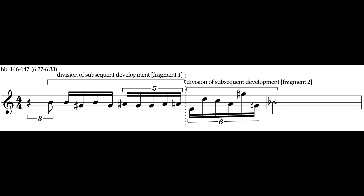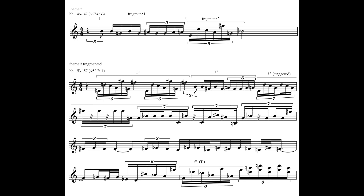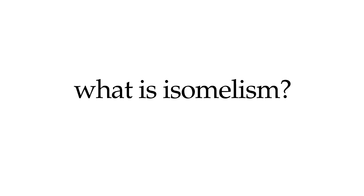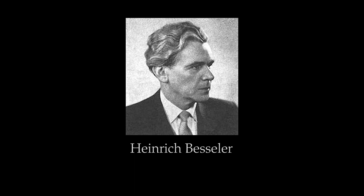A new theme is introduced at bars 146 to 147, and as before is divided into two thematic fragments, which from bars 153 to 157 are subject to separate developmental procedures. The theme is almost replicated in its entirety in bar 154, followed by a staggered second fragment prolonged by note reiteration of the G-sharp and B-flat. The second fragment re-emerges at bar 157 at T1. T1 isomalism is a term coined by German musicologist Heinrich Bessler. It has been adapted to refer to a technique that Zappa uses a lot, which is the note-for-note repetition of the melody but with variation in the rhythm.